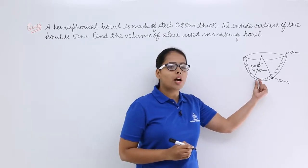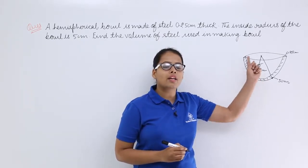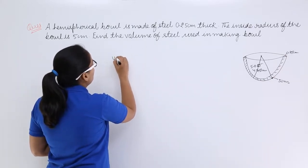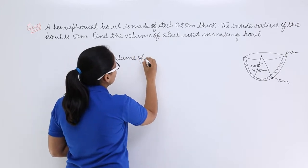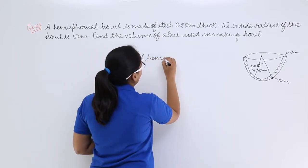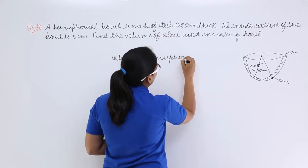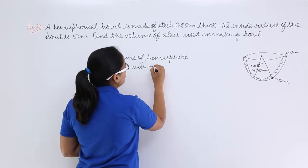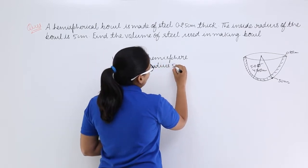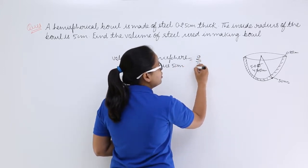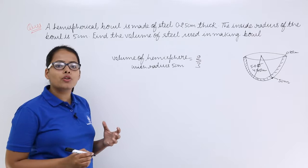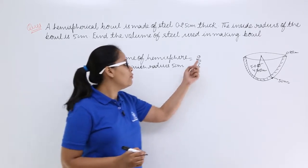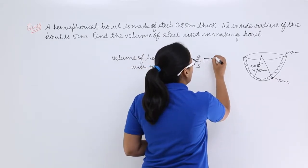To find the volume of steel required to make this bowl, we calculate the volume of the hemisphere with radius 5 cm. The volume of a sphere is 4/3 π r³, so the volume of a hemisphere will be half of the sphere, which is 2/3 π r³.